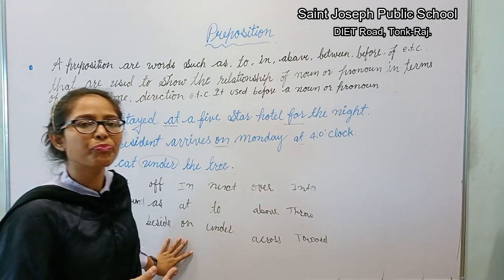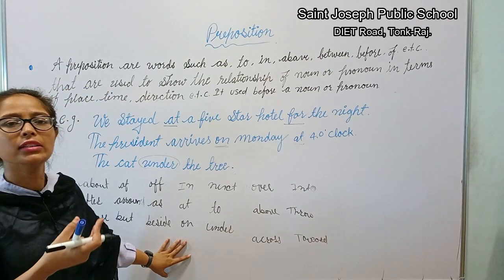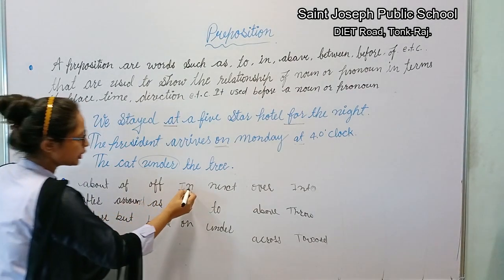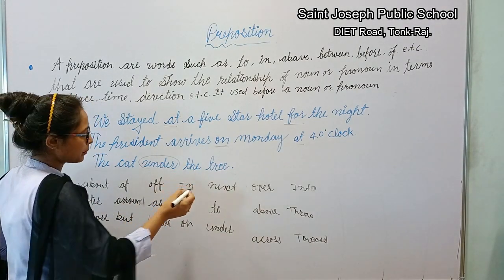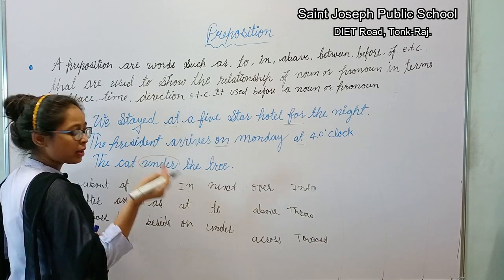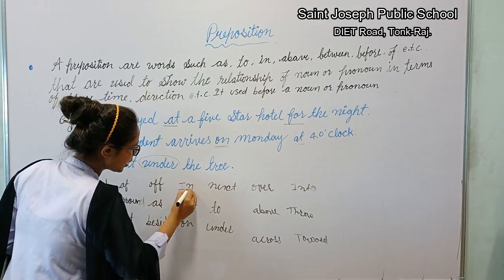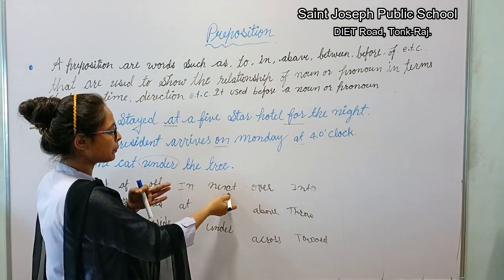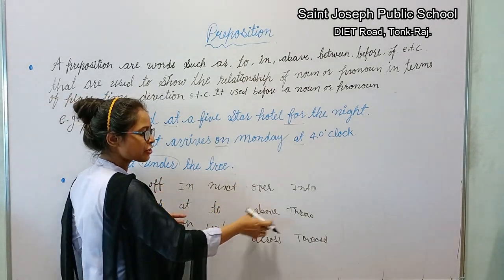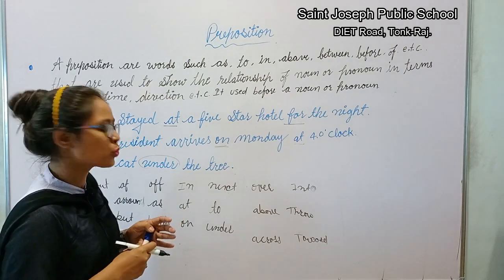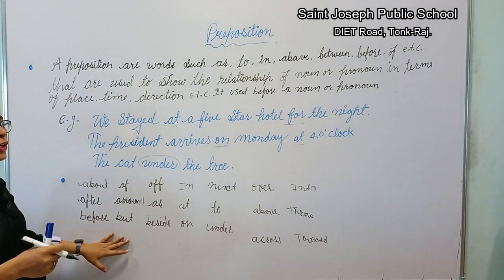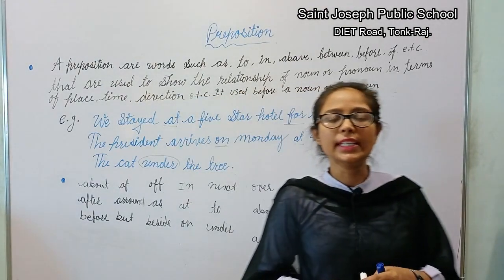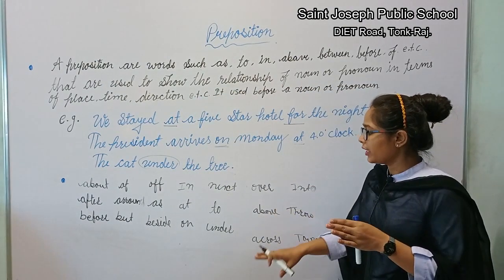These preposition words are used in different types: place, class, and direction. Words like 'in,' 'on,' 'at,' 'for,' 'next to' are used to show place, class, and direction. All these words are used in different shapes and contexts.